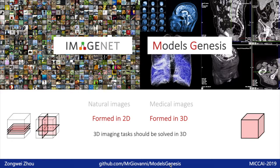Second, Models Genesis are trained in 3D directly, while ImageNet models have to be trained in 2D. The most important medical modalities are formed in 3D, such as CT and MRI. To fit the ImageNet-based transfer learning paradigm, we have to solve a 3D problem in 2D, which definitely loses 3D spatial information and inevitably compromises performance. We believe that 3D imaging tasks should be solved in 3D.